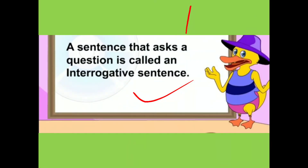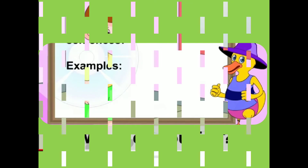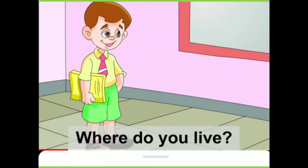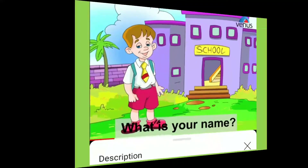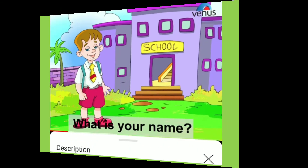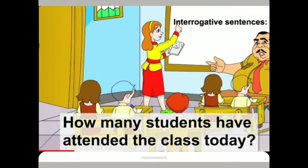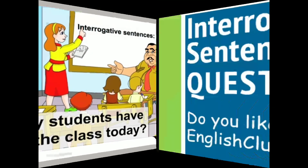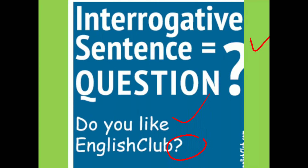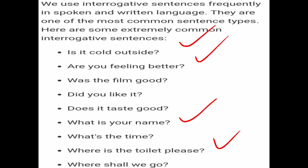A sentence that asks a question is called an interrogative sentence. Now, dear student, you come to know that an interrogative sentence asks a question and ends with a question mark. For example: Do you like English club? This is one more example of an interrogative sentence.